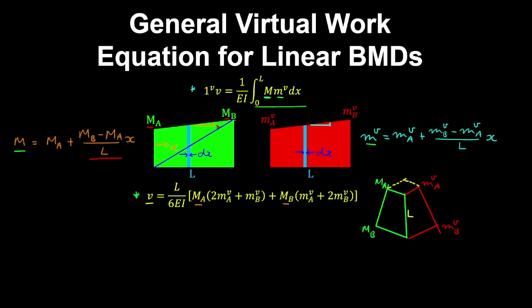Now a simple case is if we want to obtain a volume between two triangle bending moment diagrams. So for that special case, ma is 0 and mav is 0. So therefore, the deflection given by this equation is l on 6EI multiplied by mb, which is real, and that's multiplied by 2mb, which is virtual. So that gives mb by mb virtual by l on 3EI.